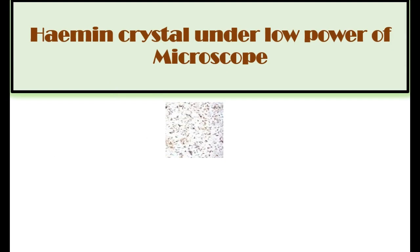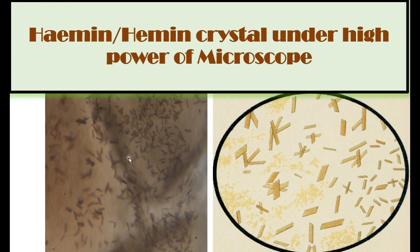Under high power of the microscope, you can see the shape of the rhombus-shaped crystals. Carefully focus on high power. When you see single or cross — a plus shape of the rhombus crystal — you can see the full marks. If you can focus such single or double crossed crystal under high power of microscope, then you may score full marks.